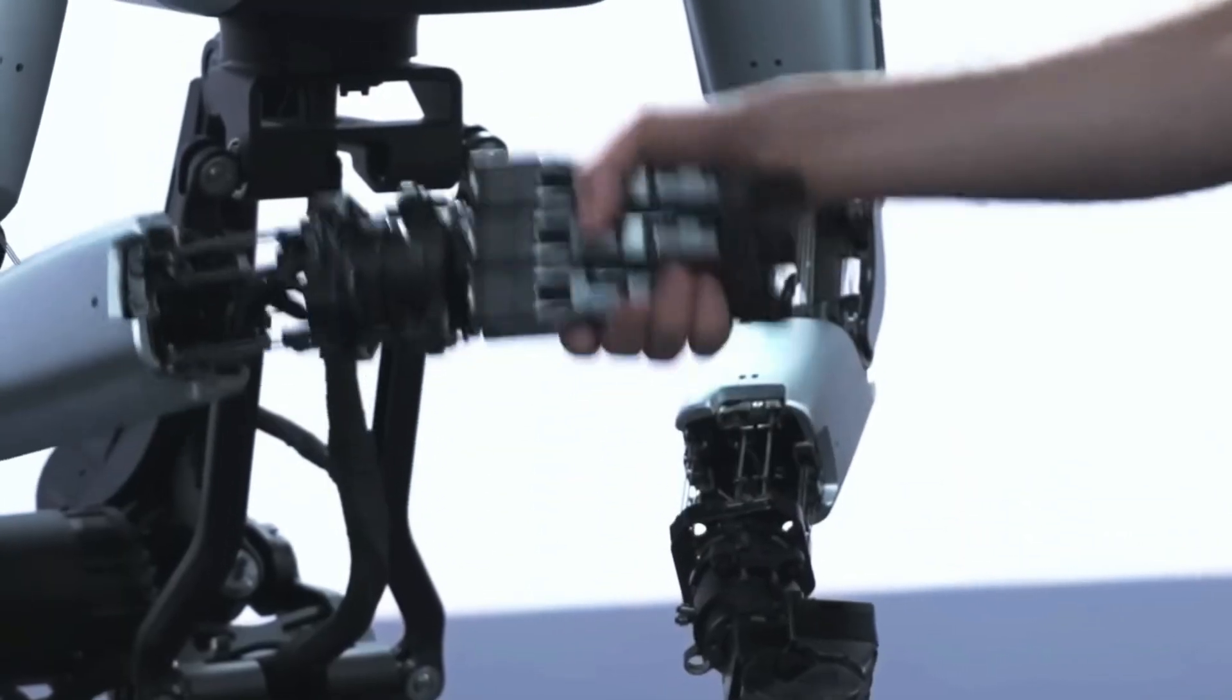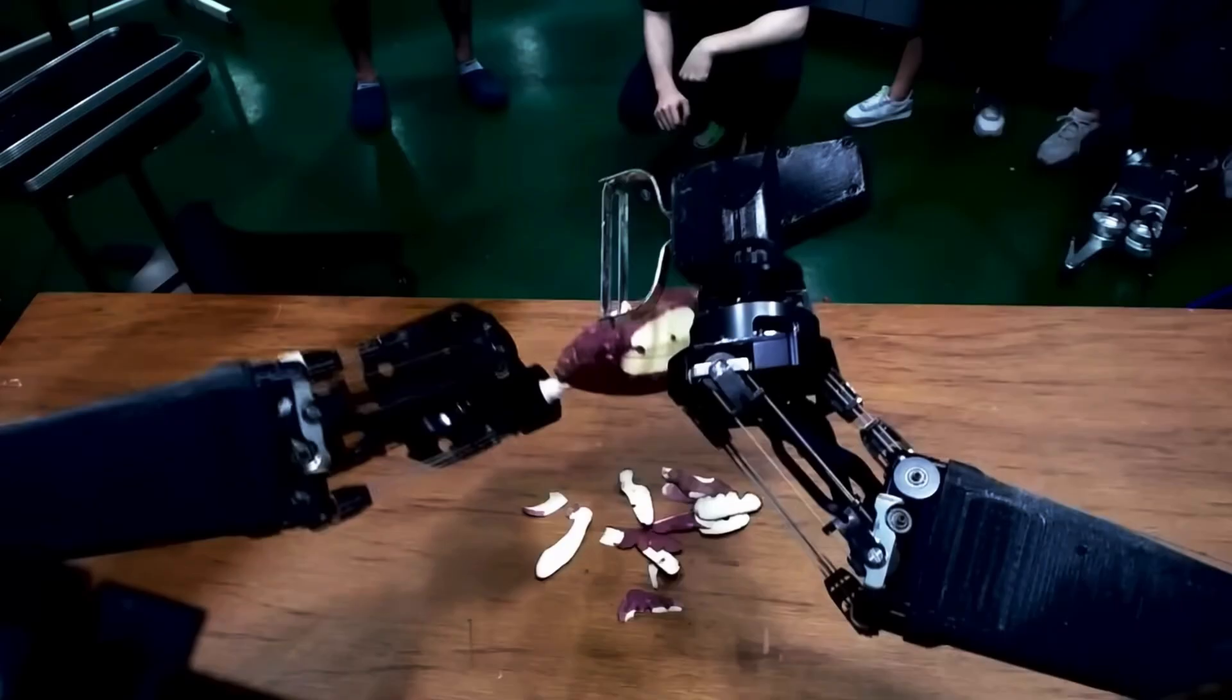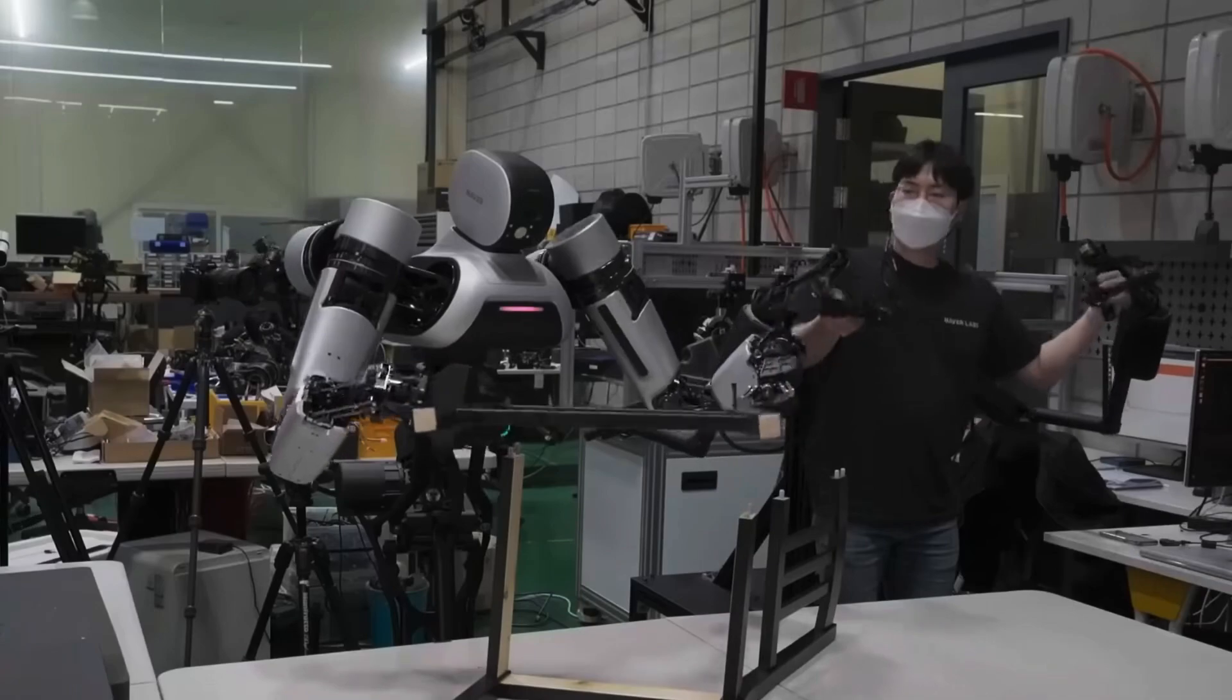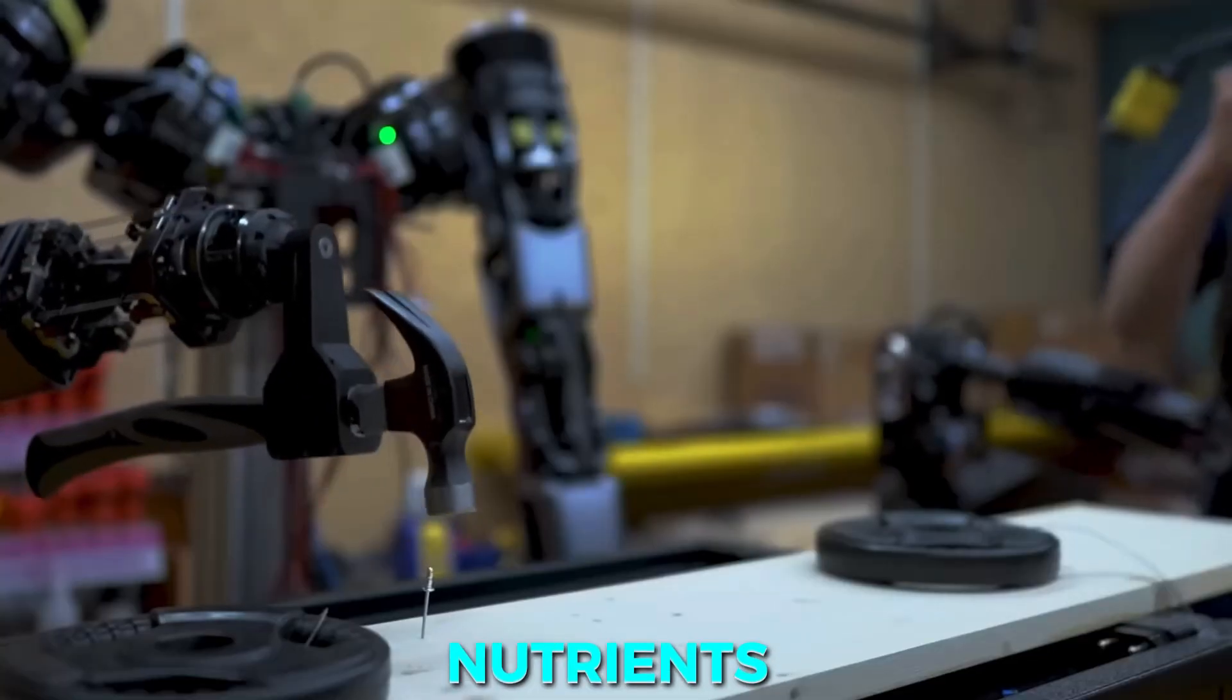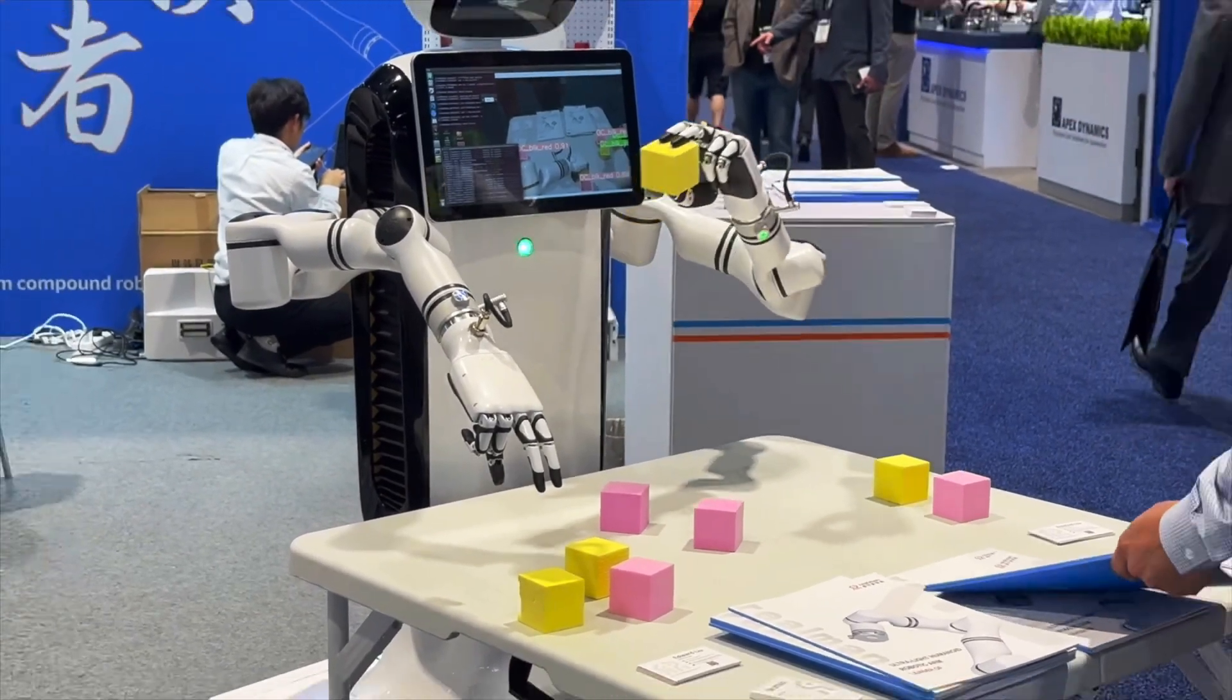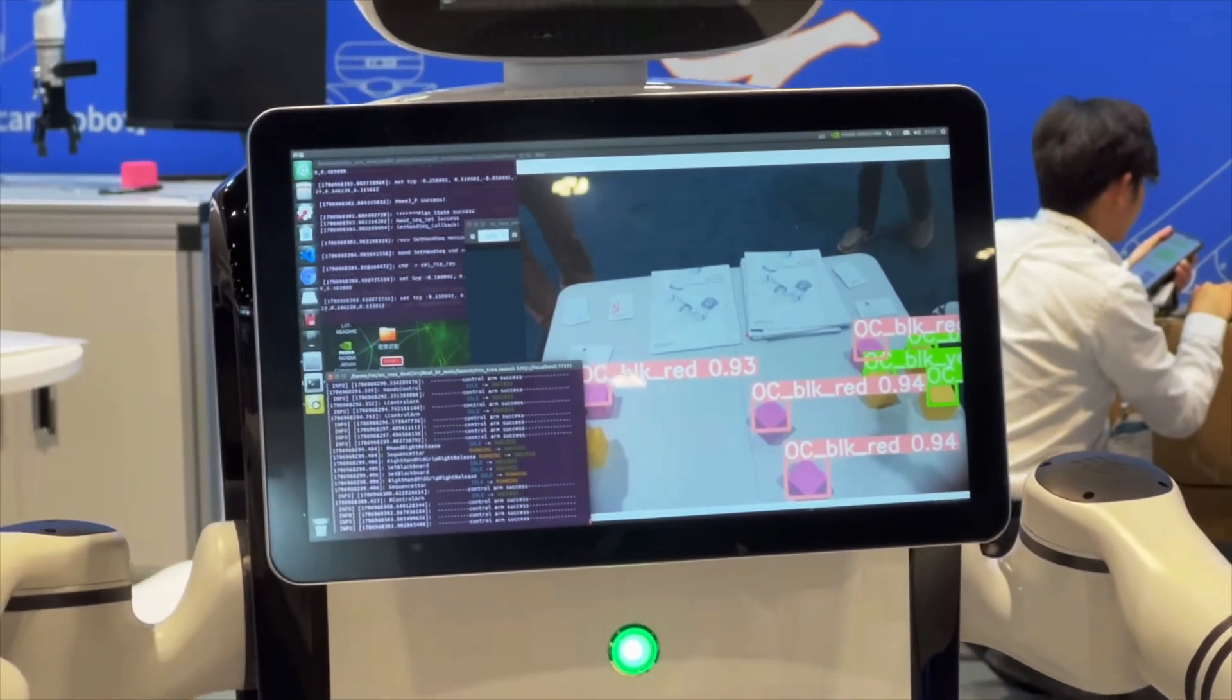But beyond the ethical considerations, there are also practical challenges to overcome. Maintaining and repairing living skin on a robot is no easy feat. It requires a constant supply of nutrients and oxygen, as well as protection from damage and infection. Researchers are still working on developing sustainable solutions to these problems, but the progress made so far is promising.